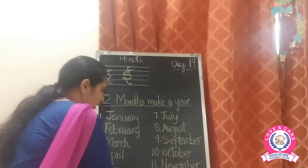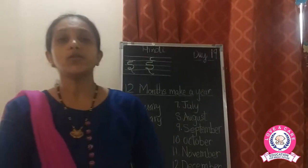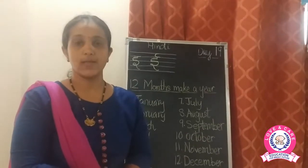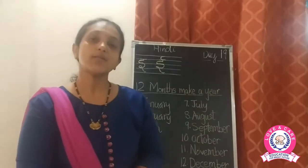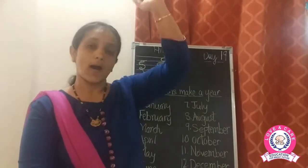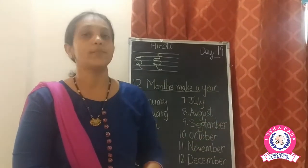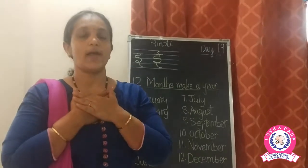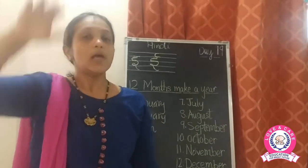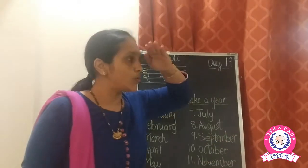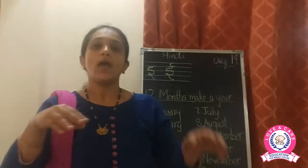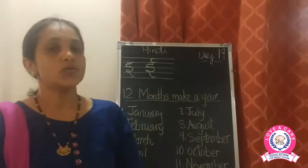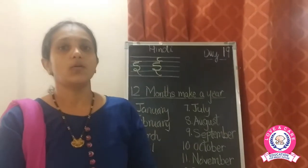Now we are going to do the revision of the rhyme — Mango Trees. Mango trees with mangoes sweet, grow high along our street. I cannot reach them at all, for I am small and mango trees are tall. Little birdie brown, would you look around and throw some mangoes down. Children, you have to do the revision of this rhyme also.